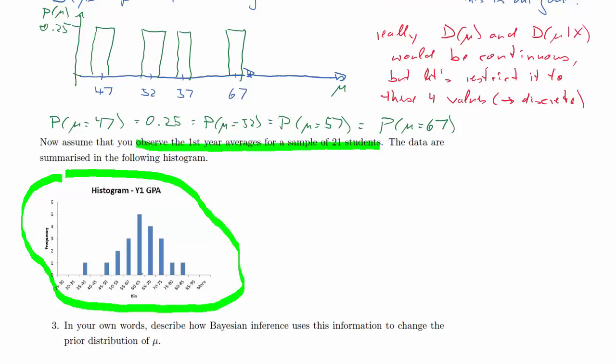And what does that mean? If we look at this histogram, possibly see that the sample average, x bar, is going to be somewhere between 60 and 65. So let's say approximately 62. That's as much as you can say from this histogram of data. Now we're being asked to describe how Bayesian inference uses this information to change the prior distribution of mu.